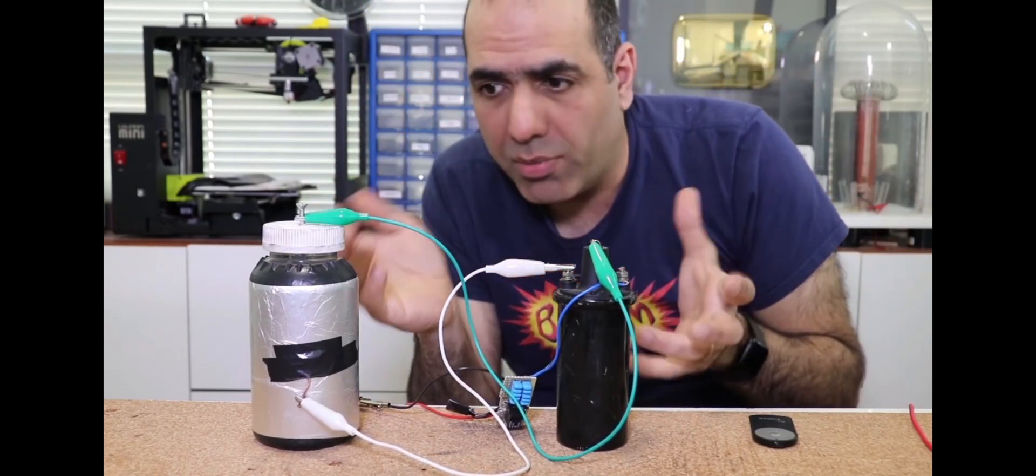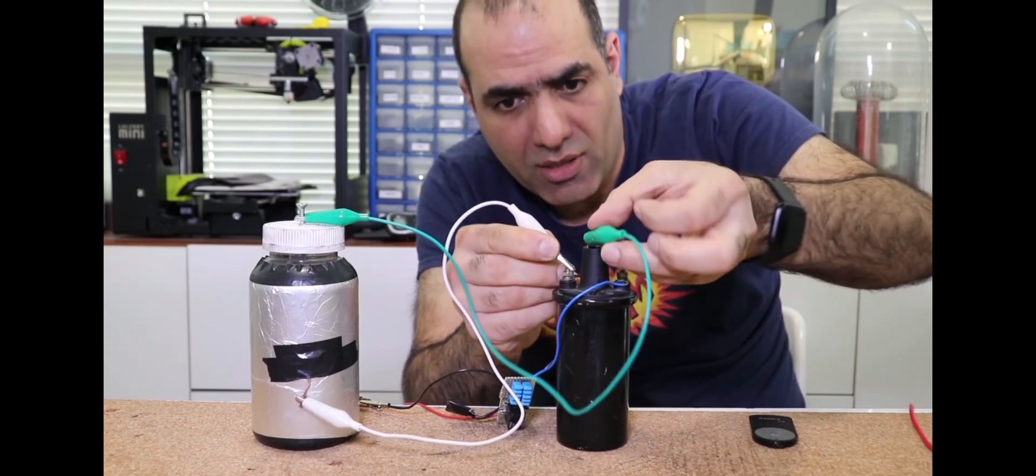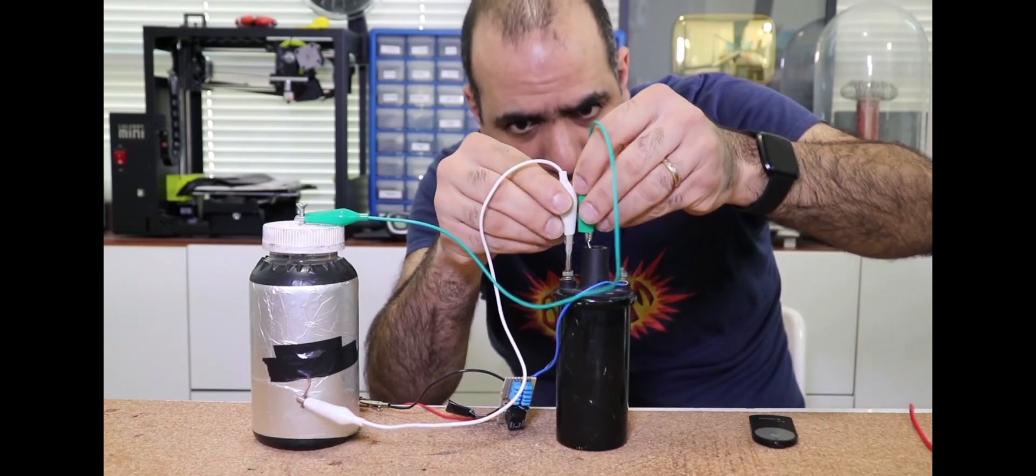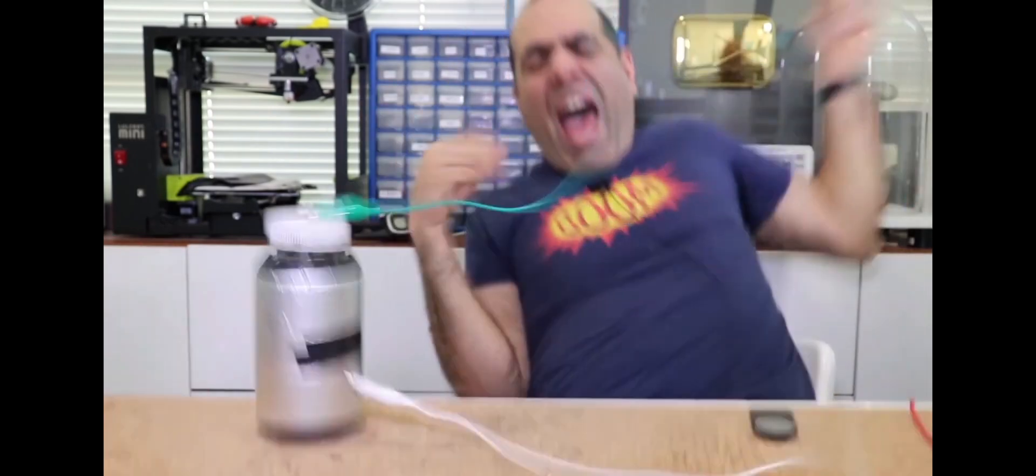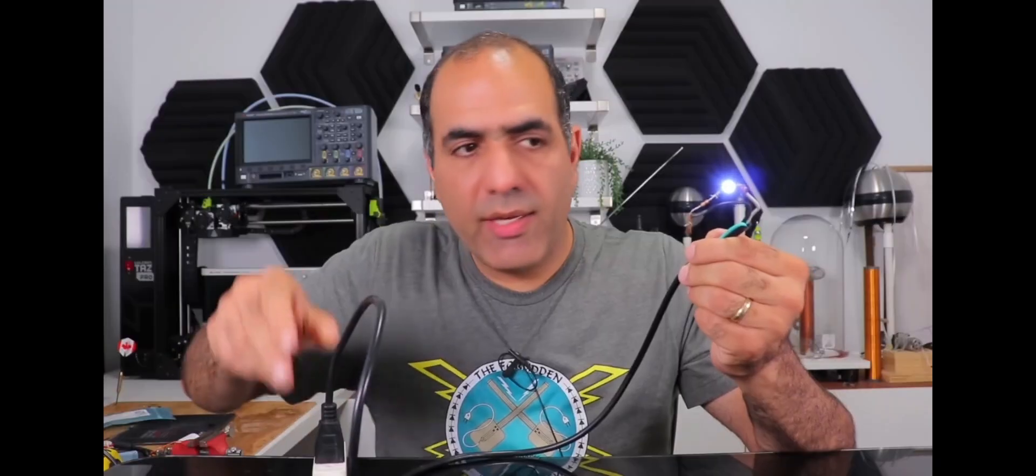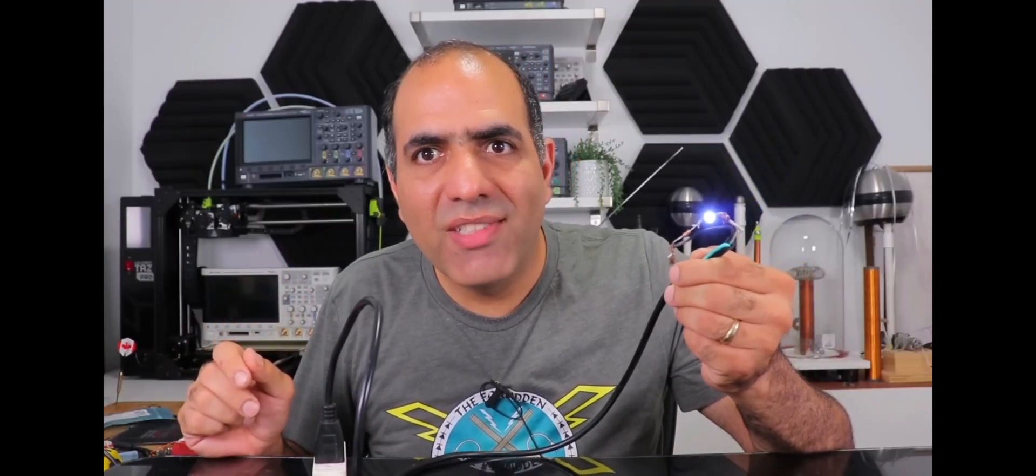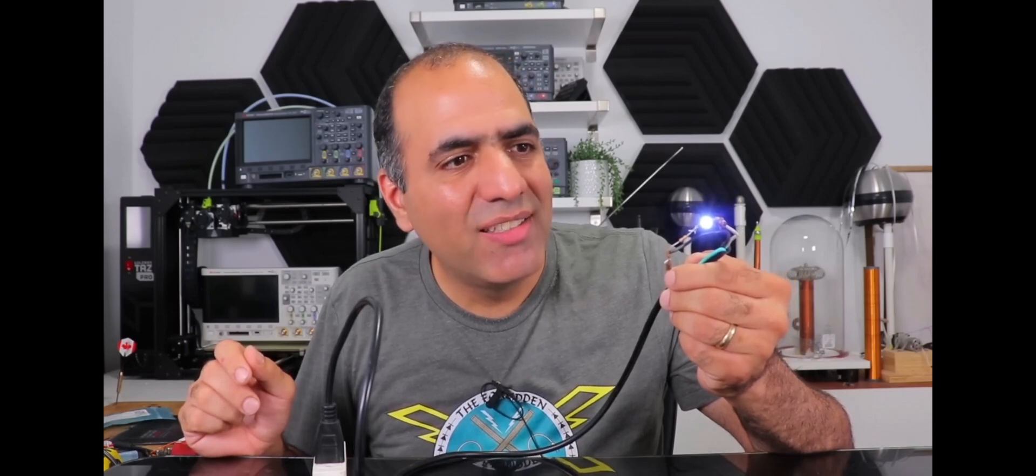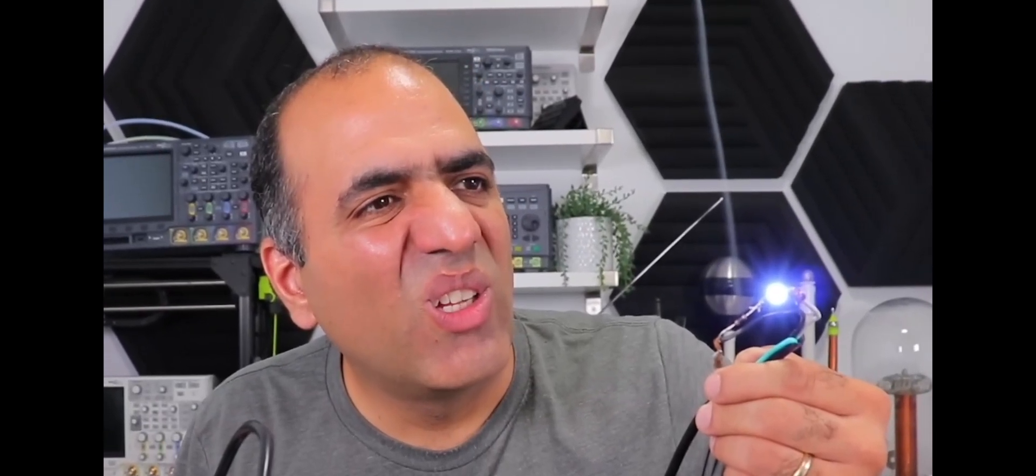See it doesn't arc anymore because I think the capacitor is loading the output voltage and reducing it. So I have to bring the contacts further close. Oh shit. Shit. There you go. Now we have a brighter LED. The resistor is smoking too much though.